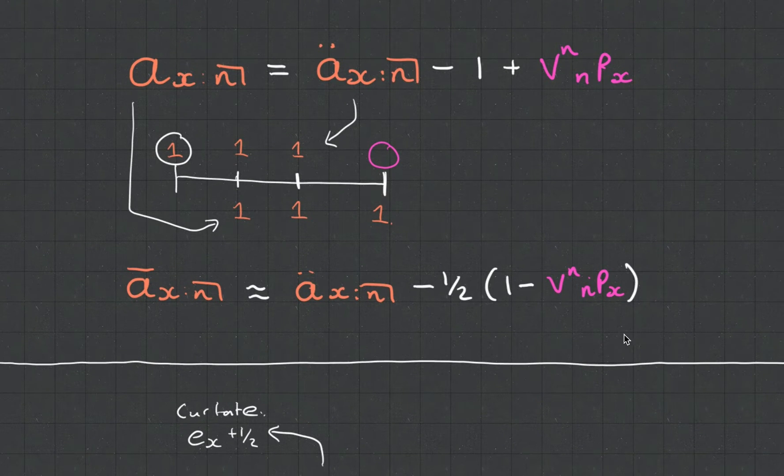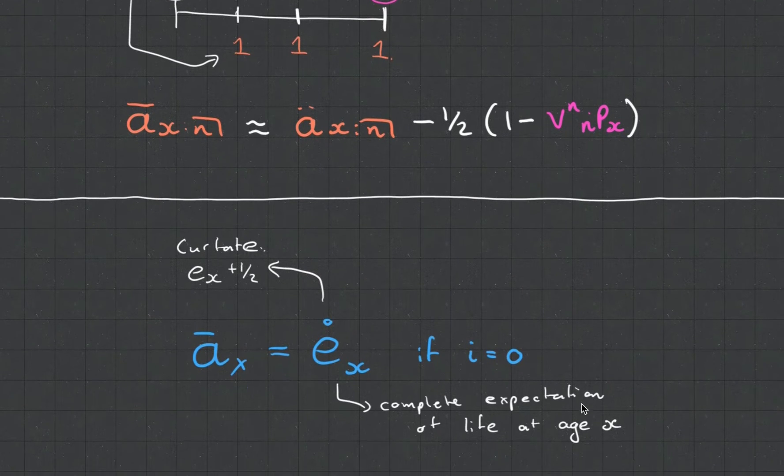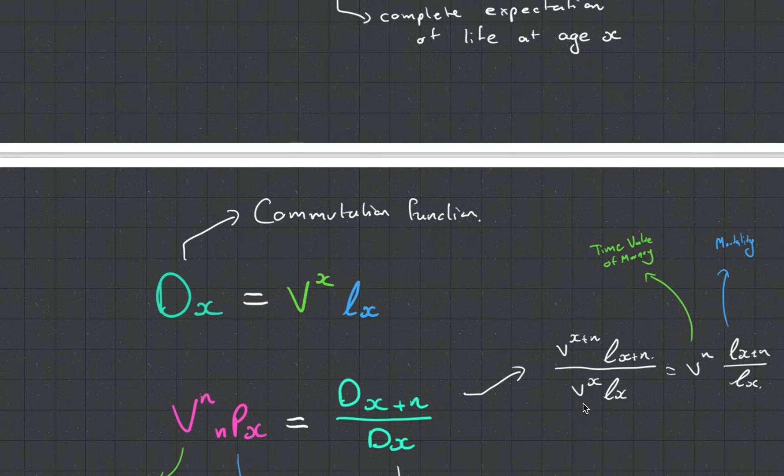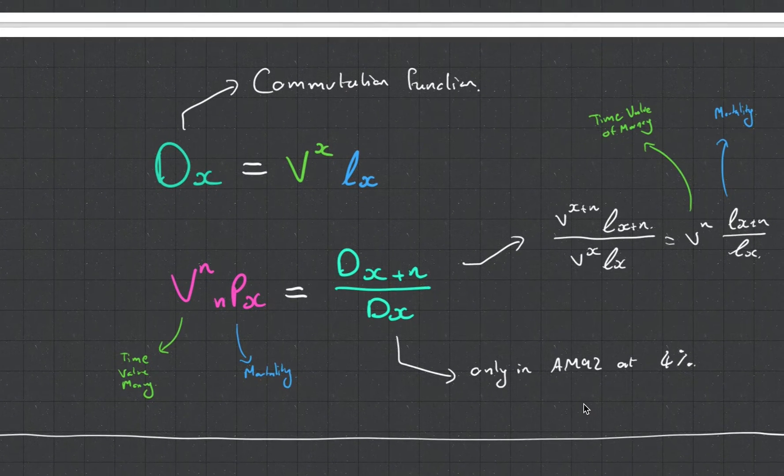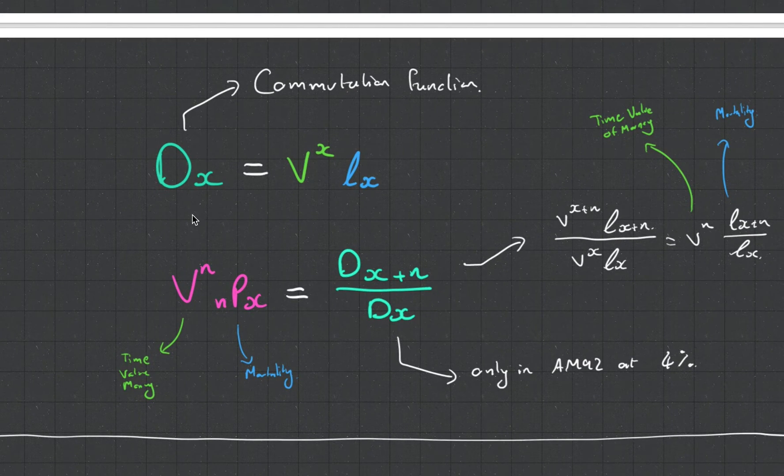But this VNNPX is quite an ugly value. So there is a computation function which we call DX. And DX has the V and it's got the LN, and these are tabulated in the orange book.